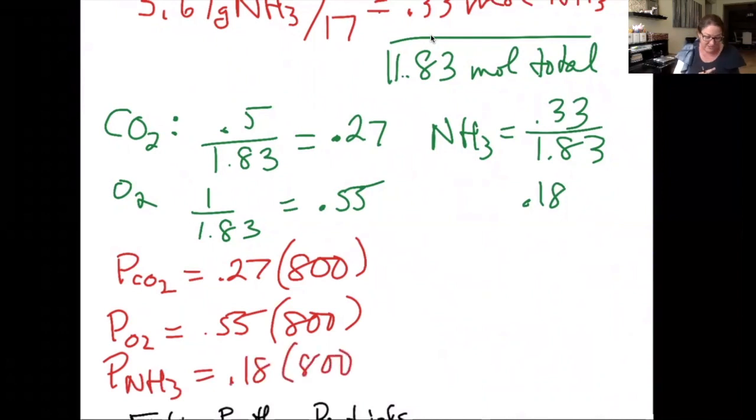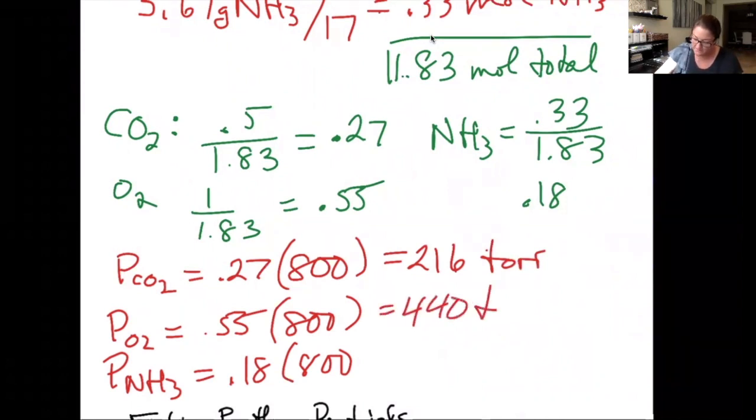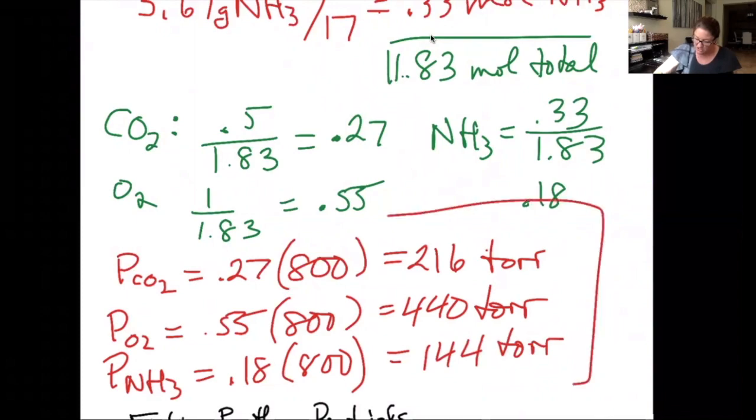So 0.27 times 800 gives me 216. Since the 800 was in torr, this is also in torr. 0.55 times 800, 440 torr. 0.18 times 800 gives me 144 torr. And those are my partial pressures of each gas.